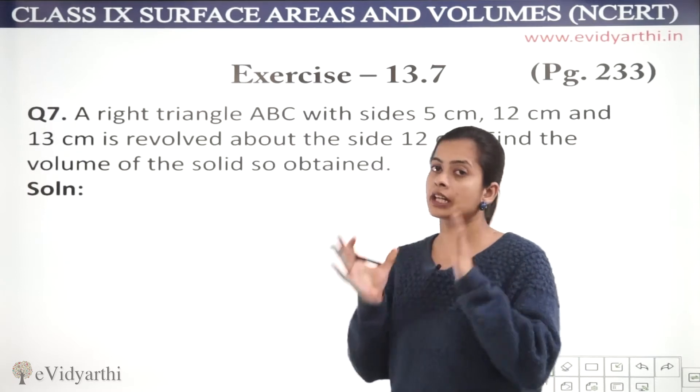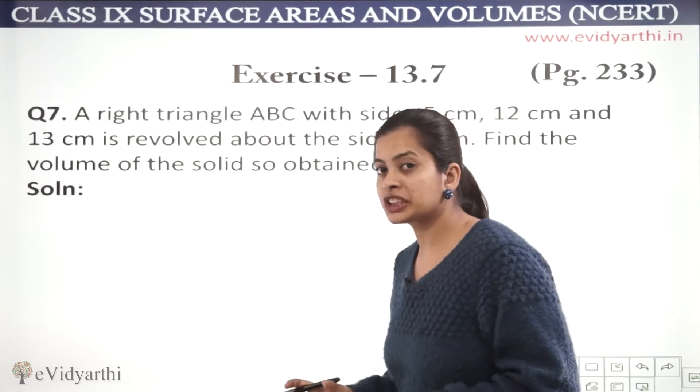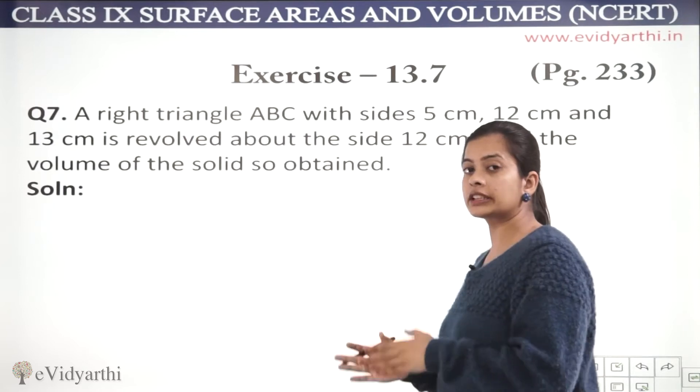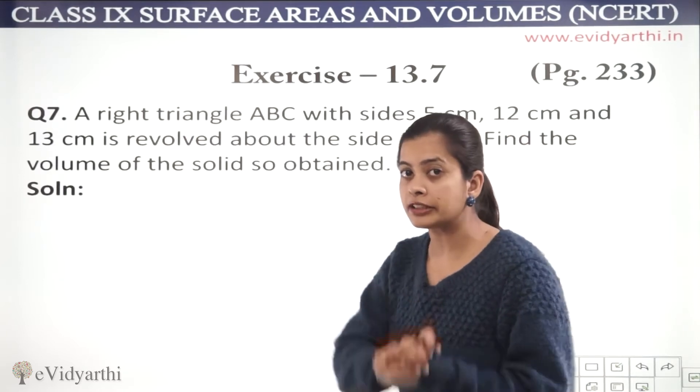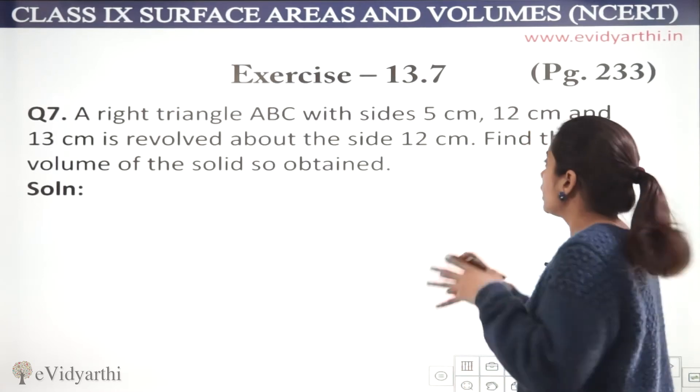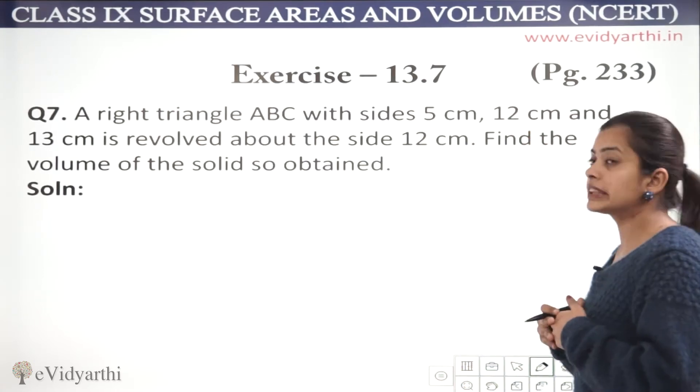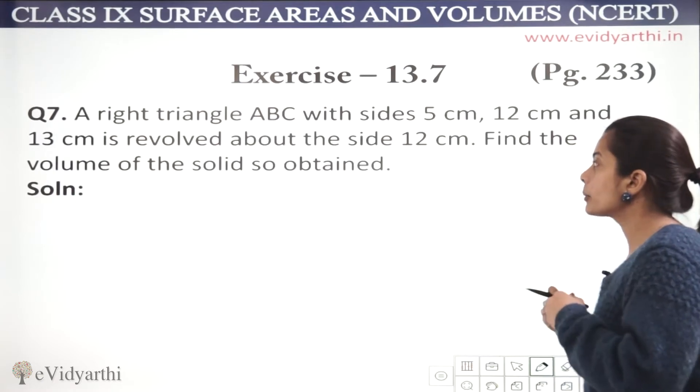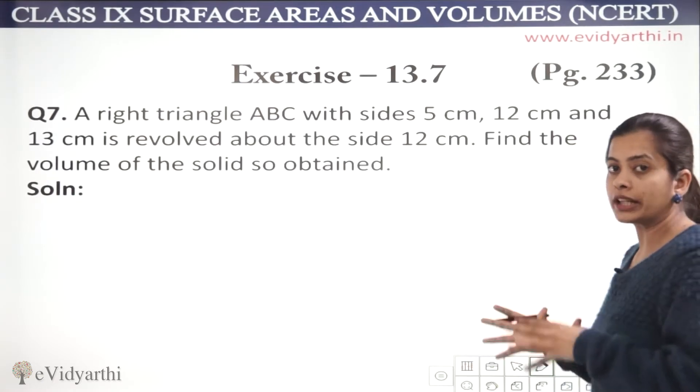First of all, we need to read our question and understand our question. If we need to draw a figure, we will do that and then we will proceed with our solution. A right triangle ABC with sides 5 cm, 12 cm and 13 cm is revolved around the side of 12 cm.